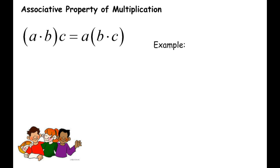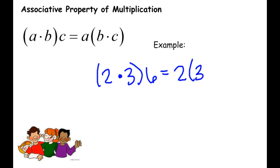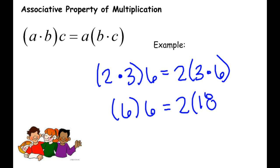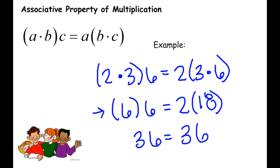Associative property of multiplication works the same way — the numbers stay in the same order, they just change groups. So (2 times 3) times 6 equals 2 times (3 times 6). Using order of operations: 2 times 3 is 6, and 6 times 6 is 36. On the other side, 3 times 6 is 18, and 2 times 18 is also 36. Even though they look like completely different problems, you still get the same answer.